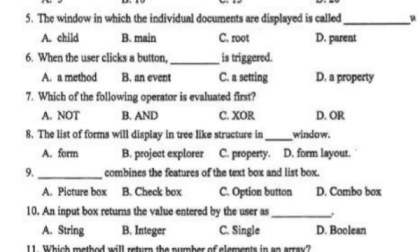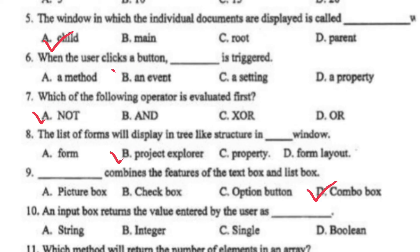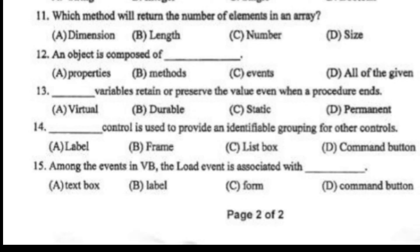The window in which an individual document is displayed is called a child window. When a user clicks a button, an event is triggered. Which operator is evaluated first? NOT. The list of forms is displayed in a tree-like structure in the Project Explorer window. A combo box combines the features of a text box and list box. An input box returns the value entered by the user as a string.